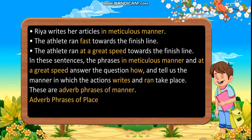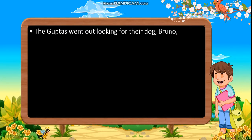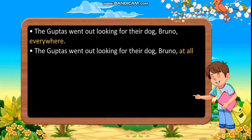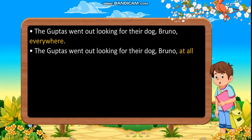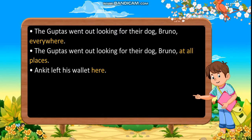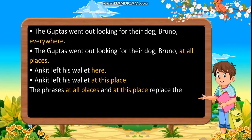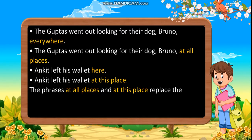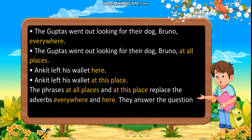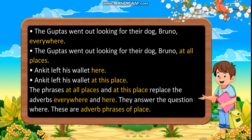Adverb Phrases of Place. Examples: 'The Guptas went out looking for their dog Bruno at all places.' 'Ankita left his wallet here' versus 'Ankita left his wallet at this place.' The phrases 'at all places' and 'at this place' replace the adverbs 'everywhere' and 'here.' They answer the question 'where.' These are adverb phrases of place.